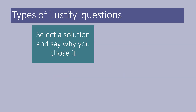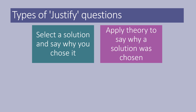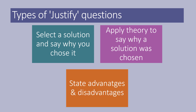There are two types of justified questions. You might either select a solution and say why it's chosen, or apply theory to say why a solution was chosen. In doing so, you need to state advantages and disadvantages — either of a solution that's been chosen for you, or compare multiple plans and decide which one's best at the expense of the others.